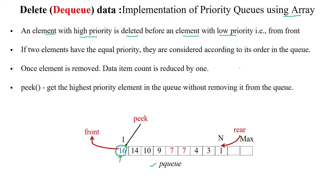If two elements are having equal priority — for example, if we have two elements both with priority five — then they are considered according to their order in the queue. So first we will delete the first value appearing with priority five, then next we will delete the seven with the same priority five.